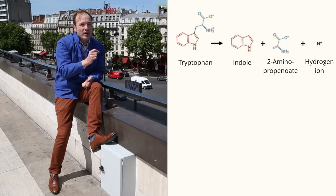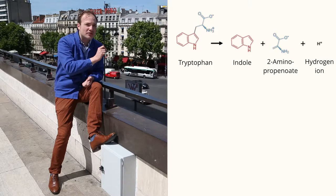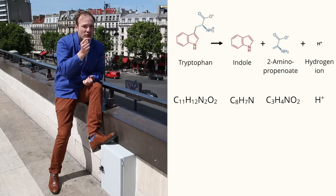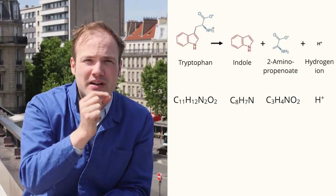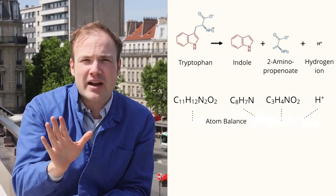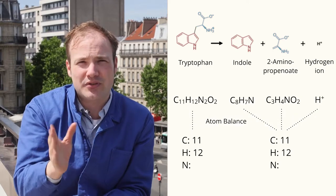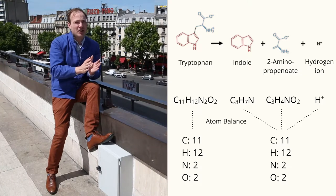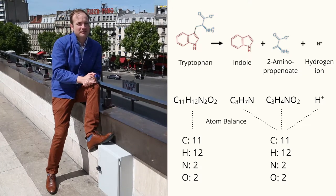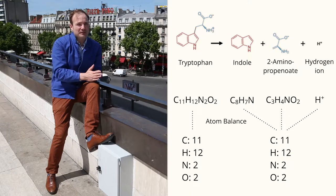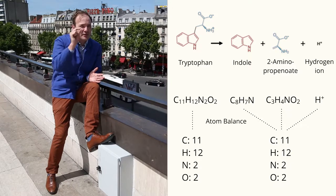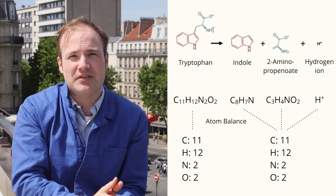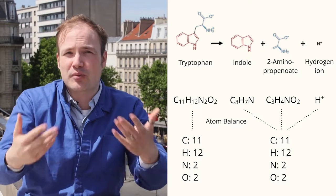We can also write out a chemical reaction in terms of the chemical formulas of the individual molecules. If we do it this way, we can remember to count the total number of each kind of atom in the product and reactant side. Chemical reactions can't create or destroy atoms, so by checking that our reaction is balanced, we can avoid making any stupid mistakes or forgetting about any stray molecules. For example, if we were being lazy, it would be easy to forget about this little proton over here, but the reaction does in fact produce acid, which might be important if we're going to produce a lot of it.